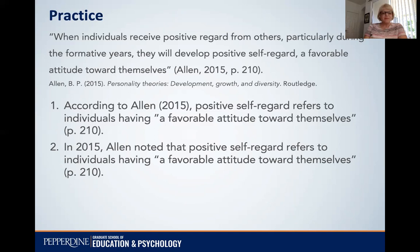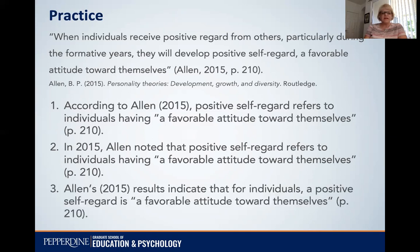Like the second example previously, number two here says: In 2015, Allen noted that positive self-regard refers to individuals having a favorable attitude toward themselves. And the last one: Allen's 2015 results indicate that for individuals, positive self-regard is a favorable attitude toward themselves. So the APA is quite strict in certain areas, but in this case you do have some creativity and flexibility, and you can introduce your quotations in a way that really helps to show you understand them and can provide that context to your reader.